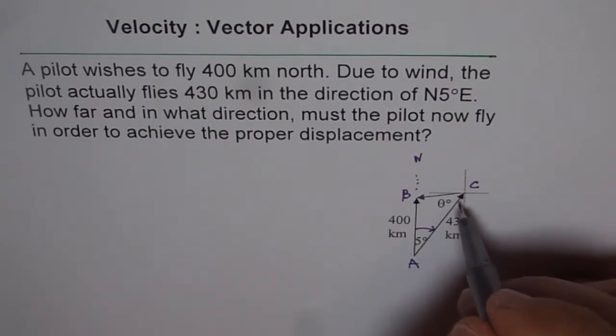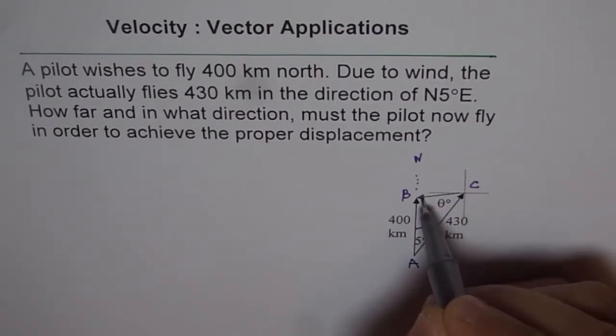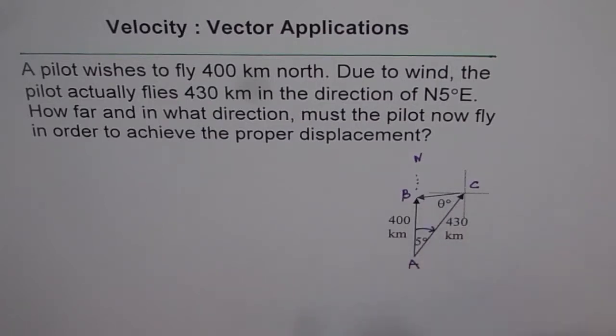This is a vector displacement triangle for you. The question is that the pilot needs to come back to B from C. So we need to find this direction and distance. These are the two things required.